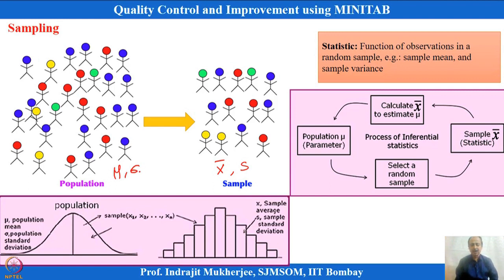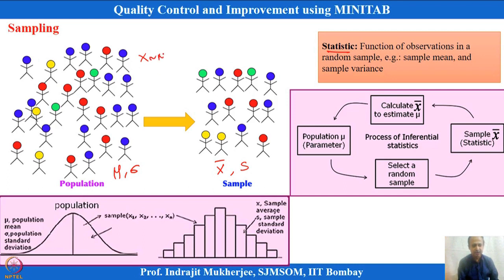x-bar and s are known as statistics, and these statistics can also follow certain distributions. If we assume the target population has random variables x following a normal distribution, then the average statistic x-bar can also follow a certain distribution. Every time I take a different sample, I will get a different x-bar from the population.